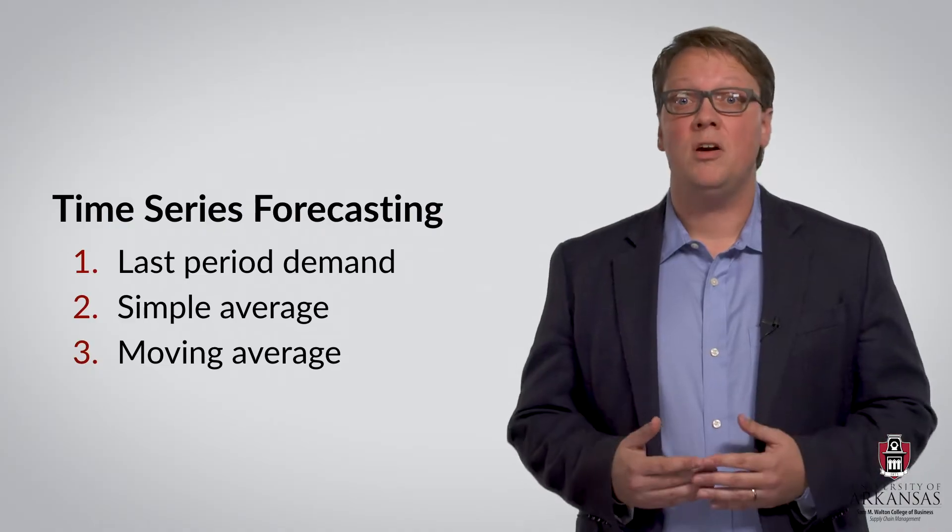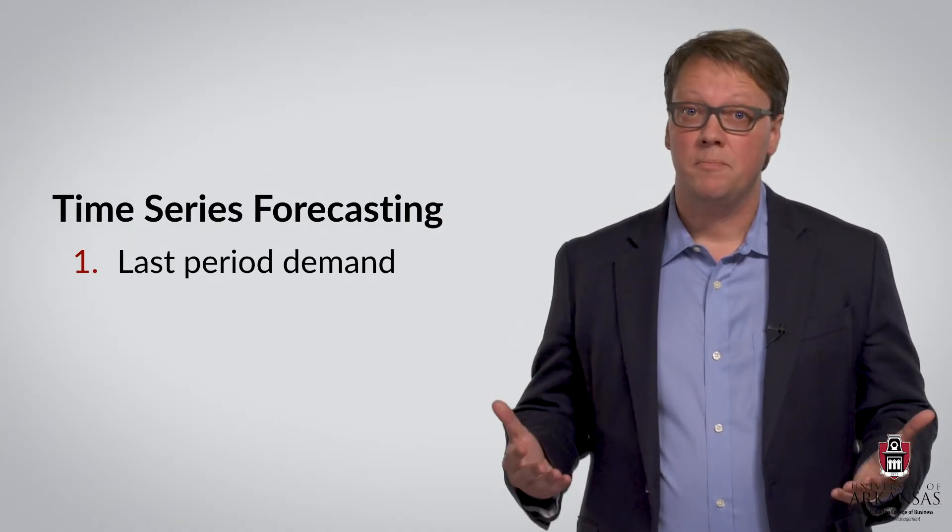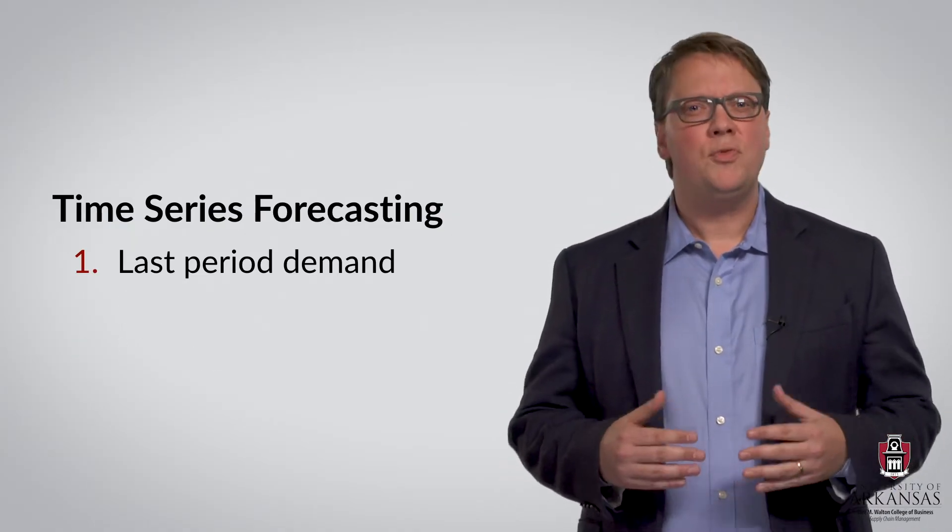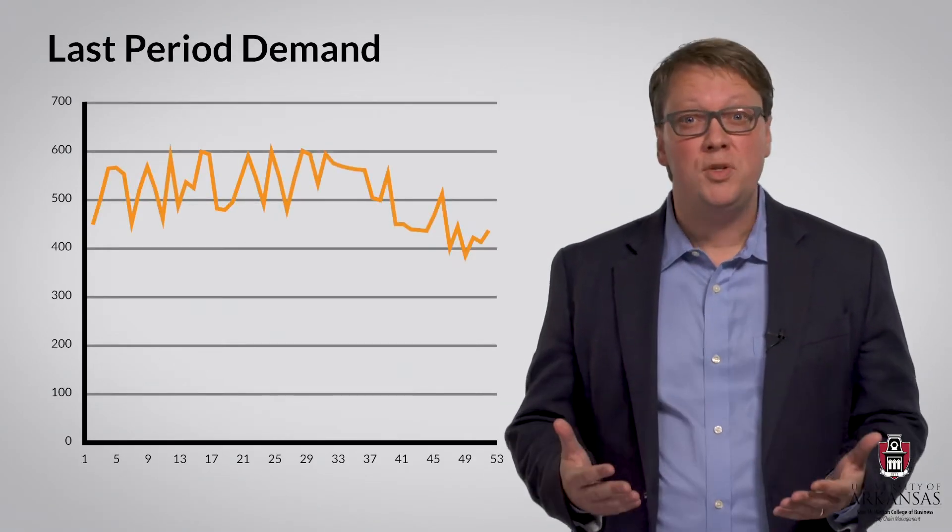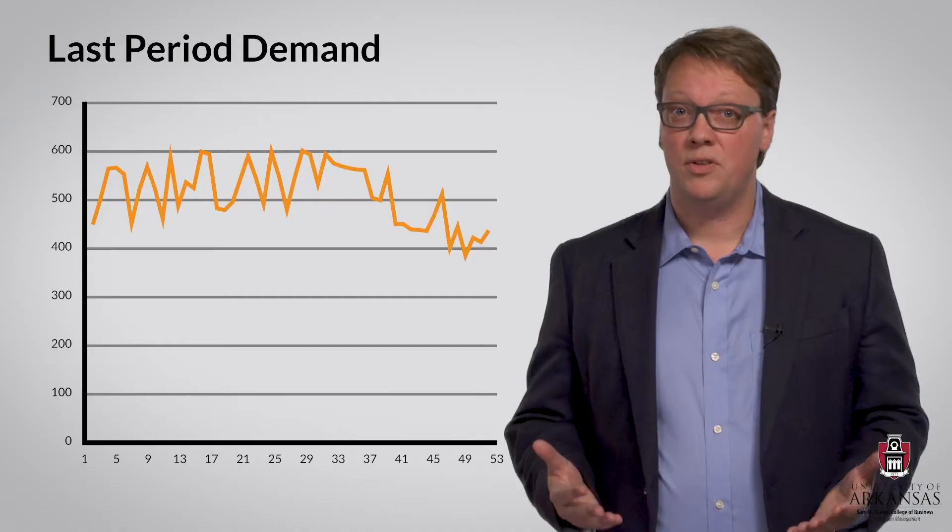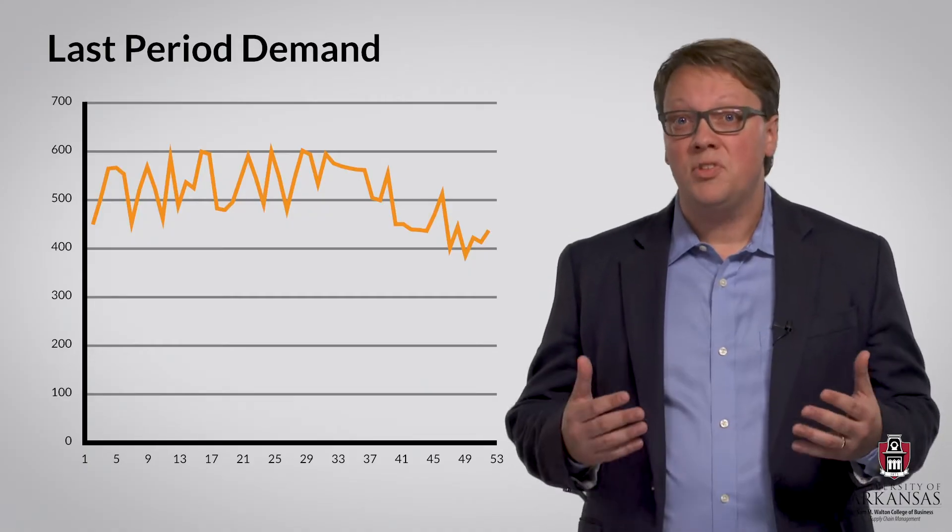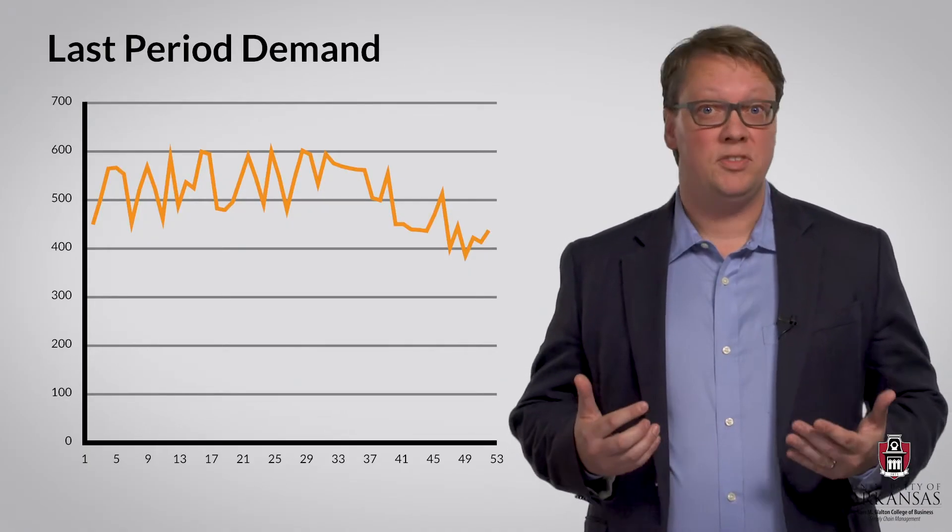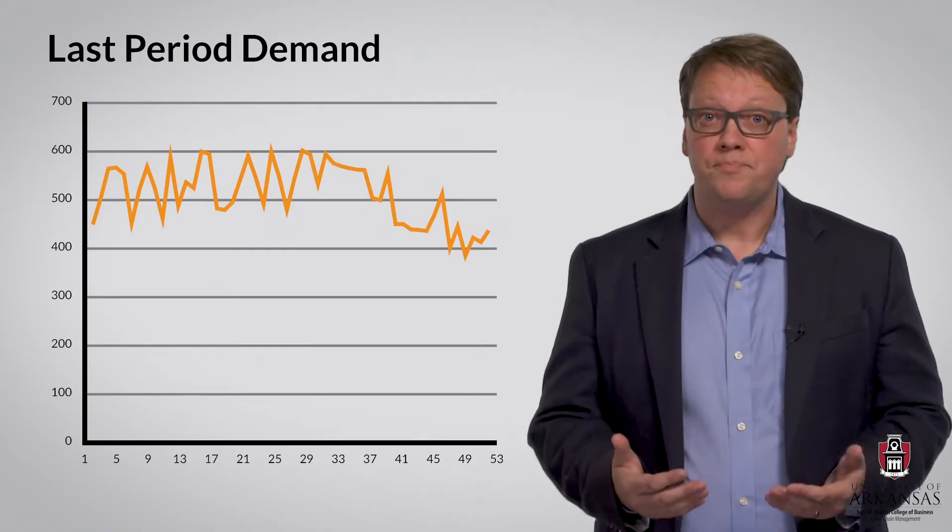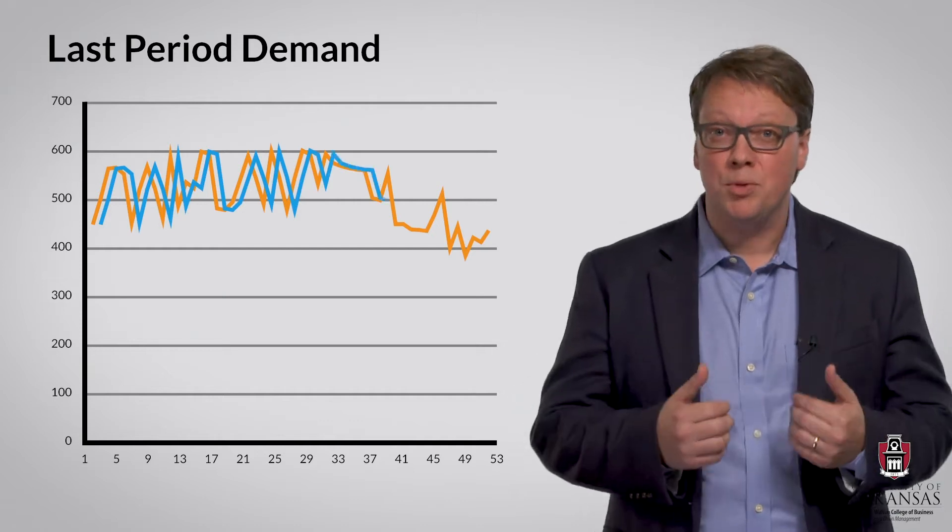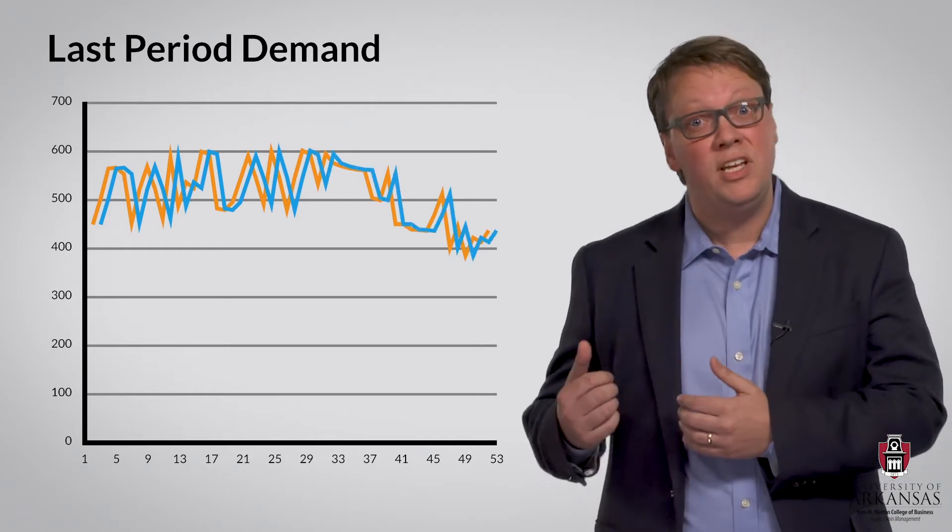Let's begin by focusing on last period demand. To illustrate how this forecasting method works, let's look at a data set of 52 weekly demand observations. As the name suggests, the last period demand forecasting technique assumes that a forecast for a given period will be equal to the actual demand observation of the preceding period.